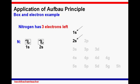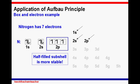We will next fill the 2S subshell, and that will leave nitrogen with three electrons left to fill. We will then subsequently fill the remaining three electrons in the 2P subshell to give us our electronic configuration in the box and electron diagram. The remaining three electrons are singly occupied in one orbital each, because the half-filled subshell is more stable.